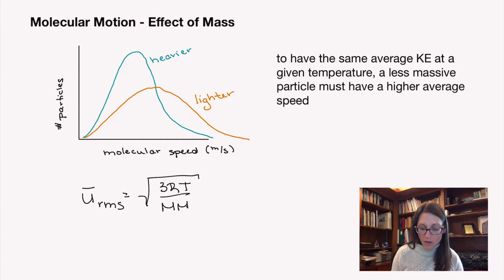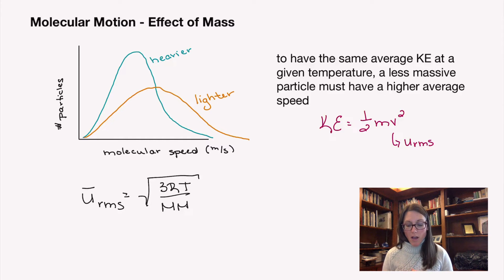Kinetic energy, if you recall, is going to be one half m velocity squared, but really what we're focusing on with our velocity, the way we're going to use it here, is that root mean square speed squared.